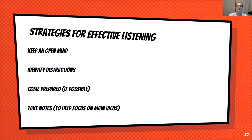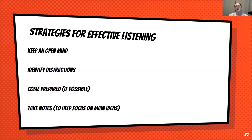Some strategies for being an effective listener: basically, keep an open mind — there are seven billion people in this world, and everyone knows something that you do not. Identify distractions that will affect you — cell phones and notifications. Mute it or put it somewhere it's not going to distract you. Come prepared if possible — maybe come with questions, and any preliminary questions you have might get answered in the speech. Take notes to help focus on main ideas if it's something you really want to retain.